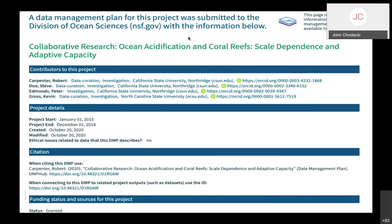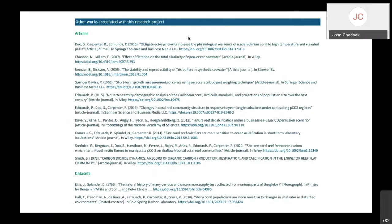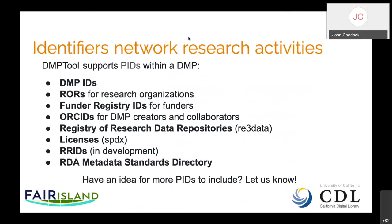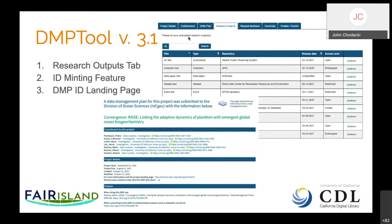We've also started working on this within DMP tool itself. Here's a representation from a landing page where the DMP ID resolves to a landing page that includes information about the project — start and end date, information that can be made public — and as the datasets and articles grow from that research, the landing page itself would start to grow. The latest version of DMP tool 3.0 does have a way of inputting research outputs directly into the system, tracking those individually, DMP ID minting, and the DMP ID landing page.